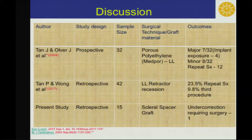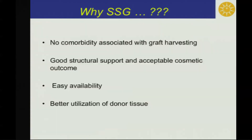In our study, undercorrection was present in only 1 patient who required surgery. Sclera is a better option because there is no comorbidity associated with graft harvesting. It provides good structural support and acceptable cosmetic outcomes, easy availability, and better utilization of donor tissue.